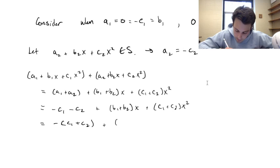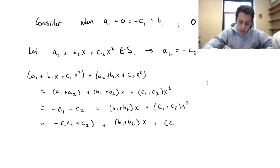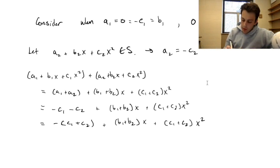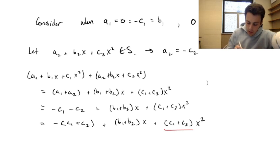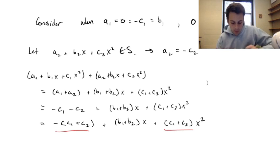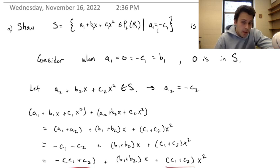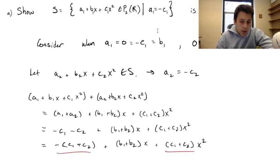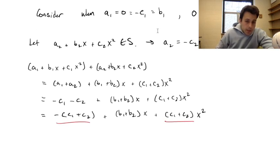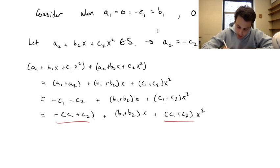We've shown here that the second-degree coefficient c1 plus c2 is the negative of the zero-degree coefficient. In this case, negative c1 equals a1 — they're just negatives of each other — so this sum is clearly in S.